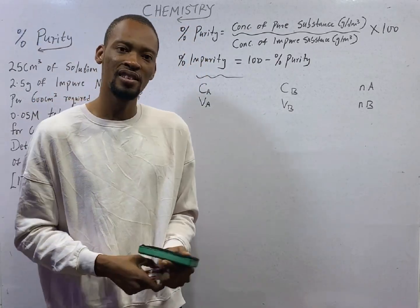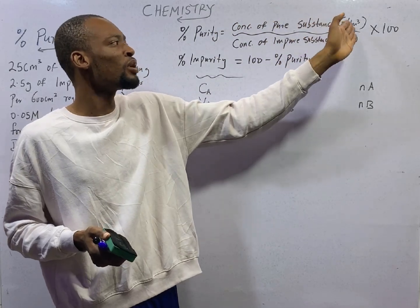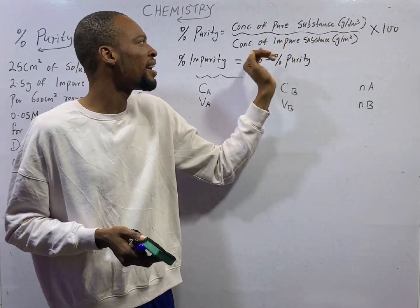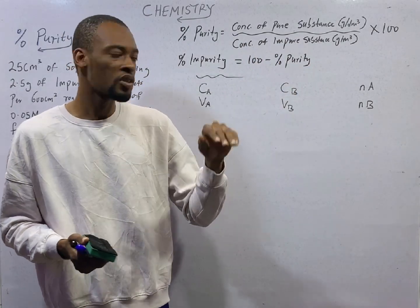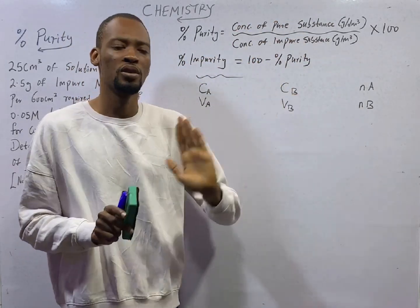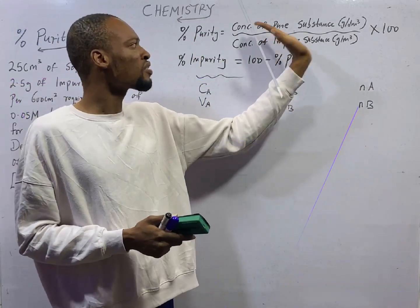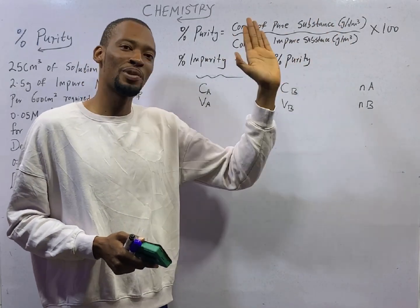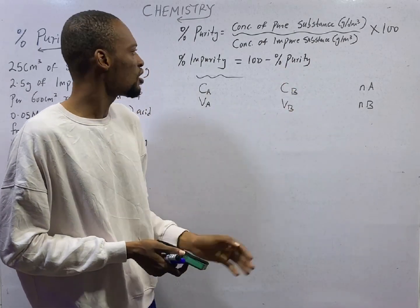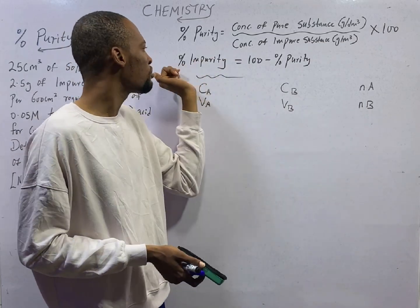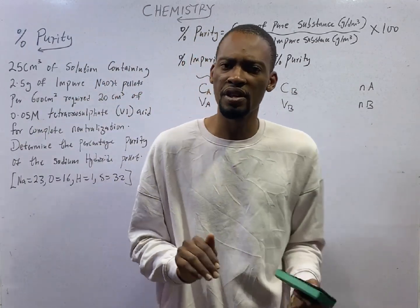Back to the topic — percentage purity. Percentage purity is simply the concentration of the pure substance in g/dm³ over the concentration of the impure substance in g/dm³, times 100. In short: percentage purity = pure ÷ impure × 100. And if you have your percentage purity and are asked for percentage impurity, percentage impurity will simply be 100 minus percentage purity.